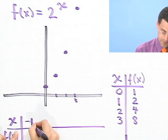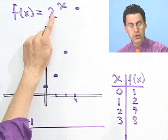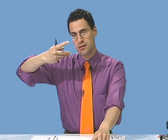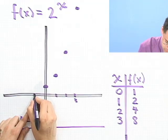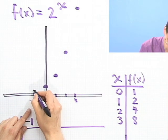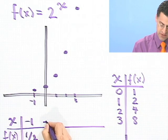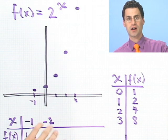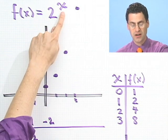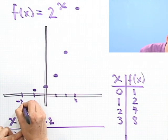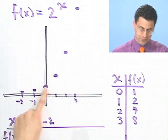Suppose I put in minus 1. What is 2 to the minus 1 power? Remember, a negative exponent means a flip. So 2 to the minus 1 is the same thing as 1 over 2 to the first, which is just 1 over 2, or a half. So at minus 1, I'm at a half. What about minus 2? 2 to the minus 2 would be 1 over 2 squared, or 1 fourth. So I'm getting smaller and smaller fractions here.